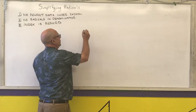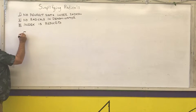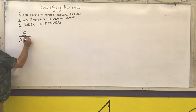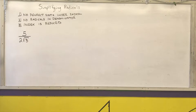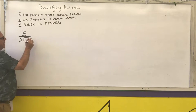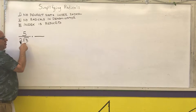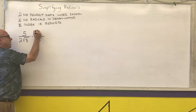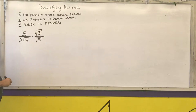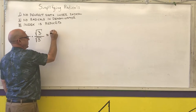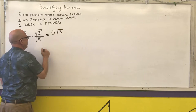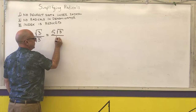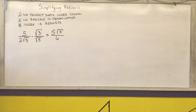The first example is 5 over 2 times the square root of 3. If you just have a single radical in the denominator, you multiply numerator and denominator by whatever will get rid of that radical. To get rid of the square root of 3, I multiply both by the square root of 3. The numerator becomes 5 times the square root of 3. The square root of 3 times the square root of 3 is 3, and 3 times 2 is 6. So the answer is 5 root 3 over 6.